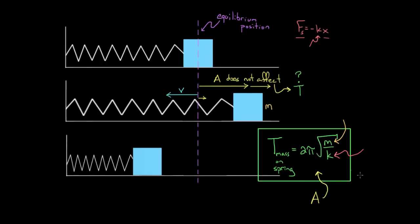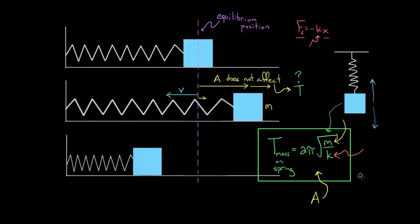Something else important: this equation works even if the mass is hanging vertically. If you have a mass hanging from the ceiling oscillating up and down, this equation still gives you the period. You plug in the mass and the spring constant, and it works. In other words, the period does not depend on the gravitational constant — little g doesn't show up here. Gravity causes the equilibrium point to shift downward, but it does not affect the period. This formula works for both horizontal and vertical configurations.